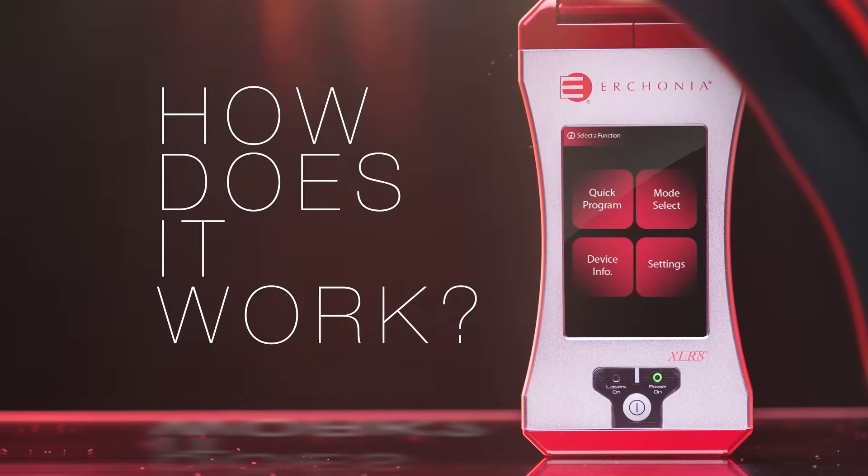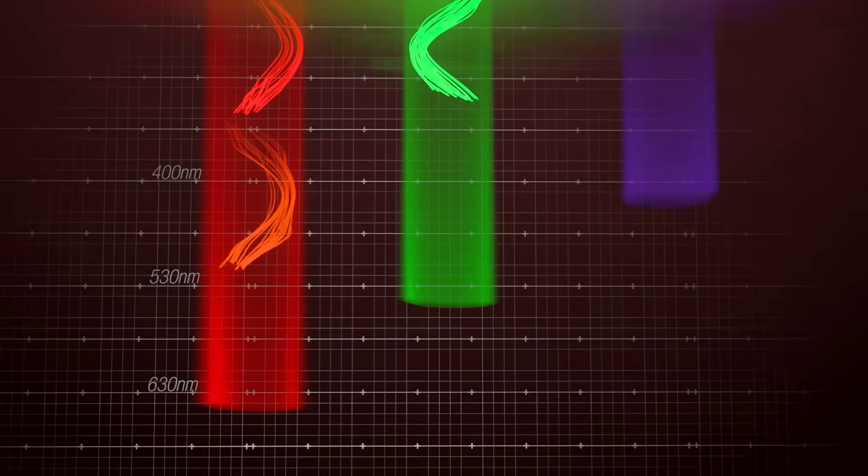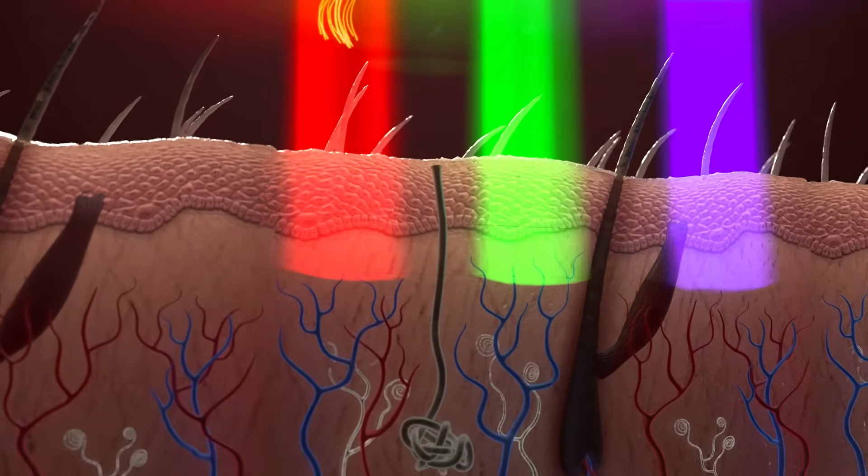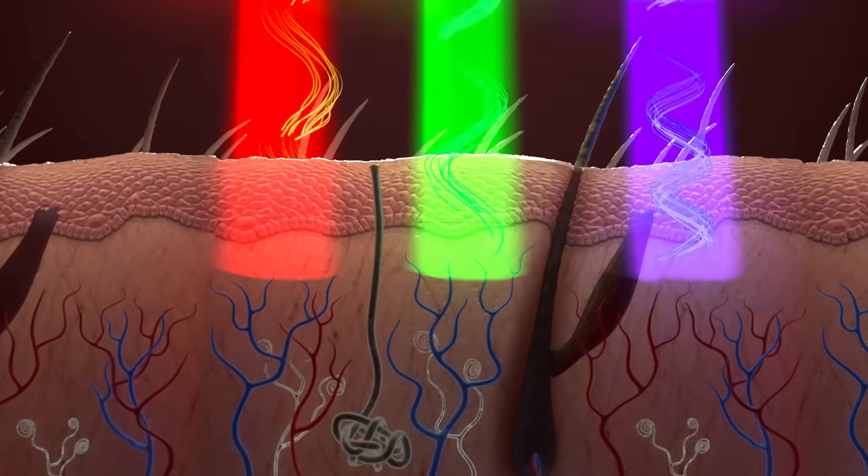Erchonia utilizes different colored lasers, known as wavelengths, to treat a variety of conditions. By applying specific laser colors, you can achieve different drug-like effects, all without harmful side effects presented by prescription medications.